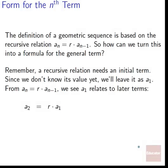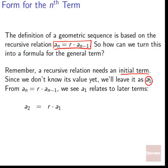The definition of a geometric sequence is based on the recursive relation a_n equals r times a_(n-1) — every term is equal to the previous term multiplied by r. So how can we turn this into a formula for the general term, where we don't have to know what the previous term is? A recursive relation needs an initial term. We need this initial term to know where we start — what is our very first term — so we just leave it as a_1.